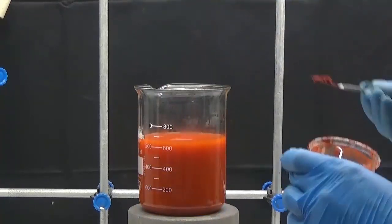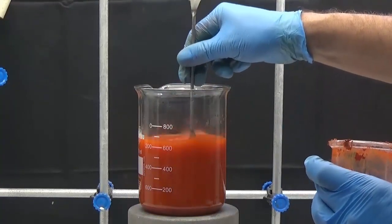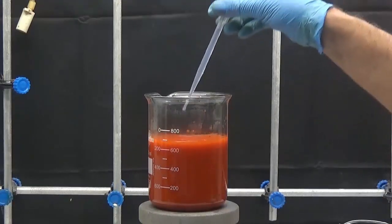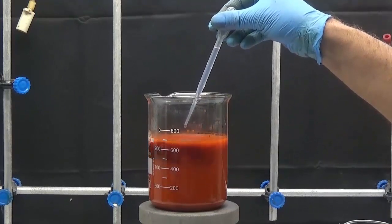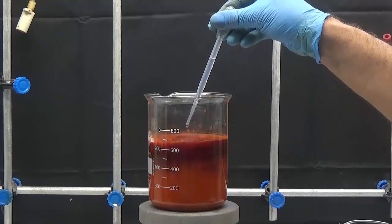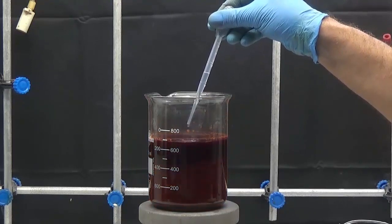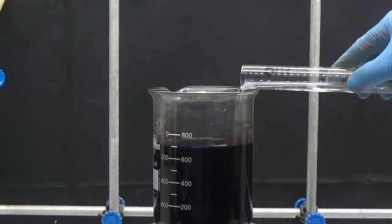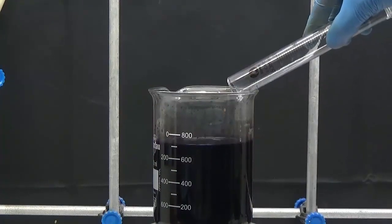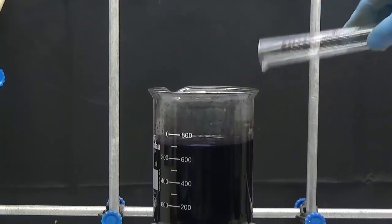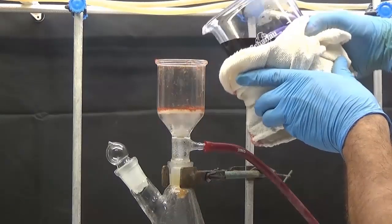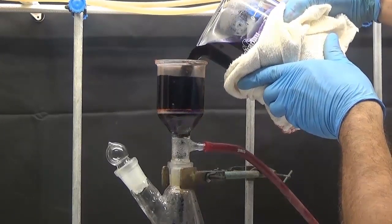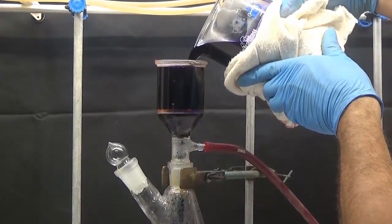Add 3 milliliters of 50% potassium hydroxide solution first. The solution has to be violet. Then add 30 milliliters of 50% potassium hydroxide solution.